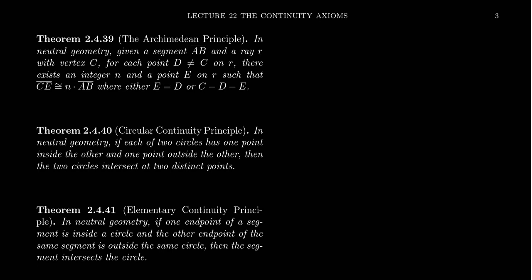In the previous video for lecture 22, we introduced the notion of Dedekind's axiom of continuity, which we then adapted as our one and only continuity axiom. When conjoined with the incidence, betweenness, and congruence axioms, this forms what we call a neutral geometry. If you just remove the Euclidean parallel postulate, then you have the axioms for neutral geometry.